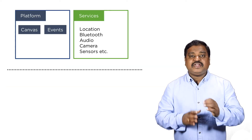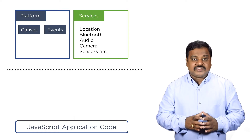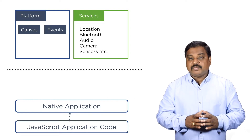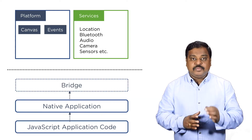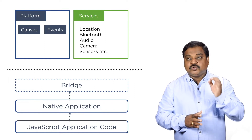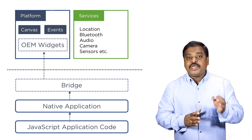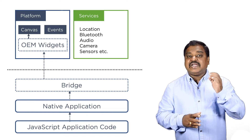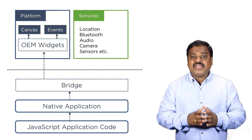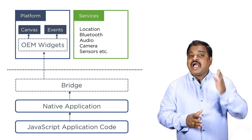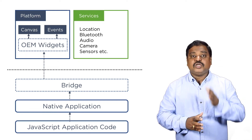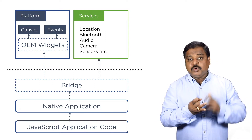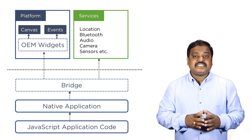Let's say you have written the application code using JavaScript and created the native app. Whenever we execute our application, it will create a bridge which is used to generate the platform-specific OEM widgets at runtime, which will be displayed using the canvas. Event handling is managed by the platform's events, and the bridge layer is also used to consume platform-specific services such as location, Bluetooth, audio, camera, sensors, etc.